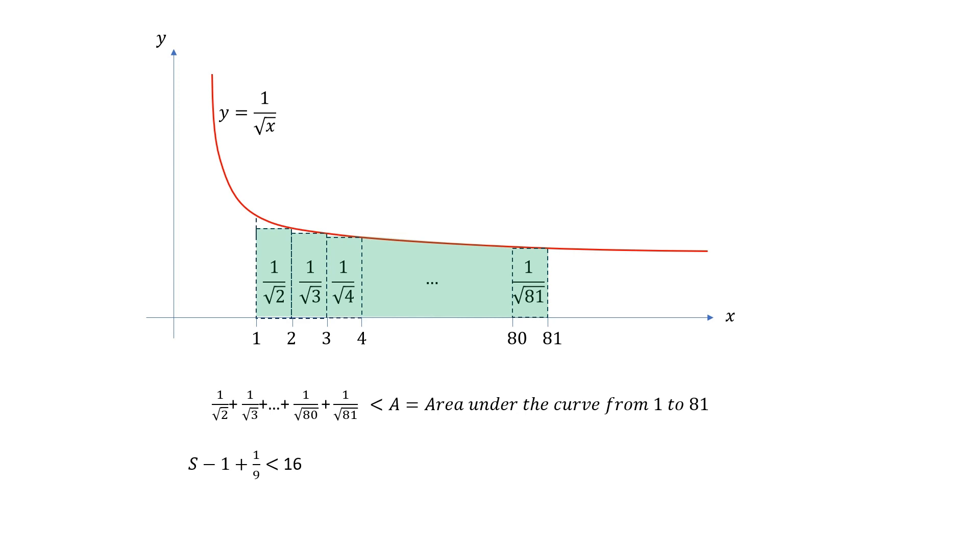So this summation is s minus 1 plus 1 over 9, which is the value of 1 over root 81, and we are saying that it's less than that area we just calculated, which was 16. If you simplify you get s is less than 17 minus 1 over 9, and obviously if that is true, s is also less than 17.